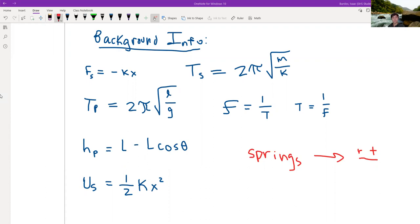And then frequency, that is measured in Hertz. And that is one divided by the period. And then period is one divided by the frequency. And then the height of a pendulum, what is the height that it changes, is L minus L times cosine of whatever angle that it's at. And then there's also potential energy of a spring, which is one half times spring constant times displacement squared.